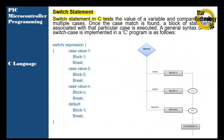The switch statement in C tests the value of a variable and compares it with multiple cases. Once a matching case is found, the block of statements associated with that particular case is executed. The general syntax shows: switch expression, then case one, case two, up to case n, and a default with break. If a case matches, it will execute that block, then break and exit the switch statement.